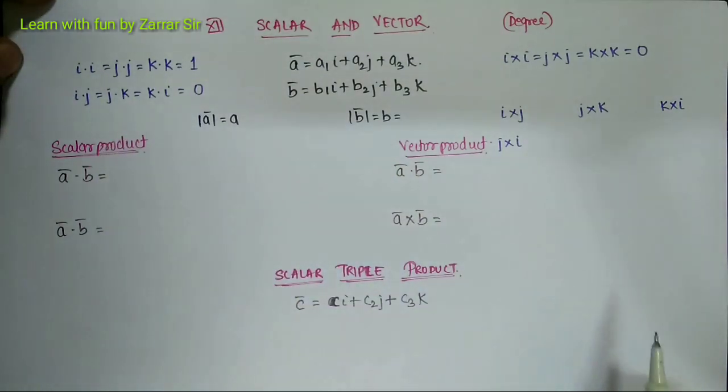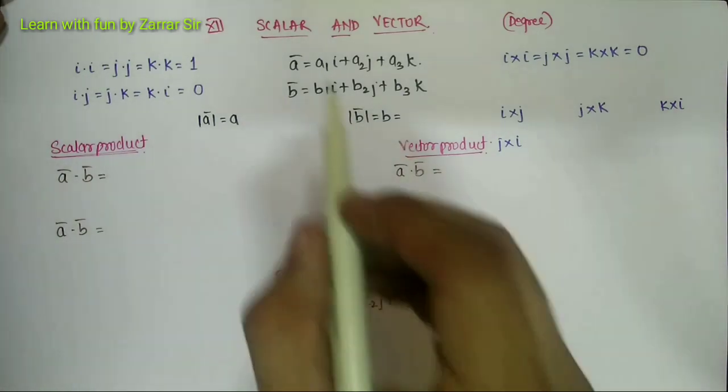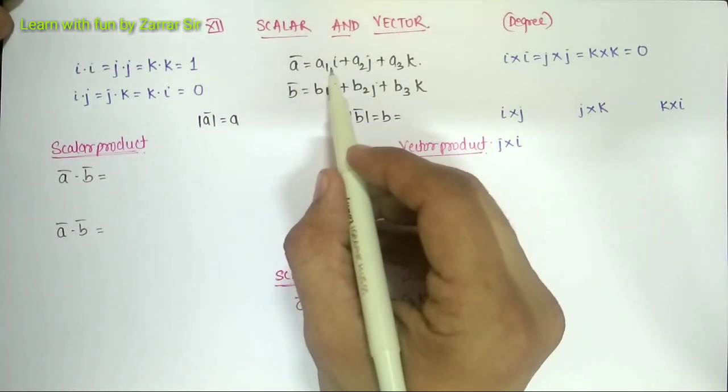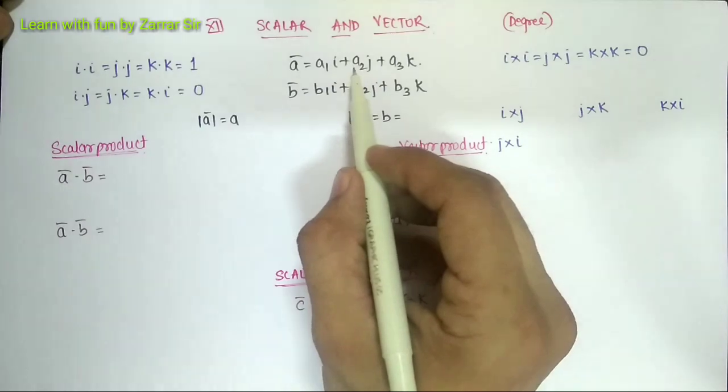In this session I will introduce you to the formulas and basic fundamentals of scalar product and vector product. Suppose there is a vector a bar in the direction of x it is a1, in the direction of y it is a2, in the direction of z it is a3.